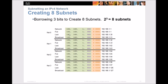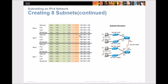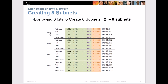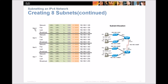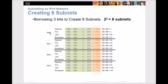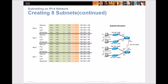So going back to the PowerPoint: we borrowed three bits, giving us eight subnets. Looking through the list, our first number in each row is the network address, then the first usable address in the range, then the last usable address, then the broadcast. It goes all the way down through subnet zero, one, two, three — continuing to what we call network seven, since zero counts as a number.